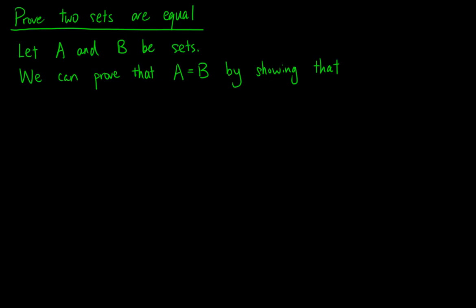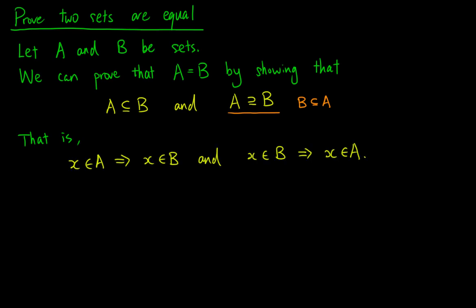Here, we introduce a common technique to prove that two sets are equal. If we want to prove that sets A and B are equal, we can show that A is a subset of B and A is a superset of B. Where A is a superset of B, denoted by the backward subset symbol, just means that B is a subset of A. We can formulate the subset conditions as: x in A implies x in B, and x in B implies x in A. This method is called double inclusion.